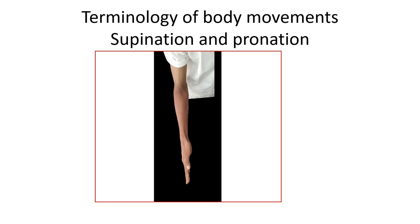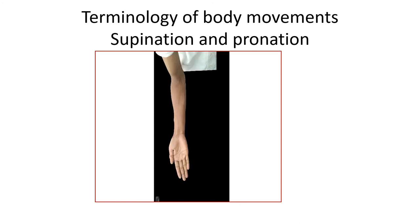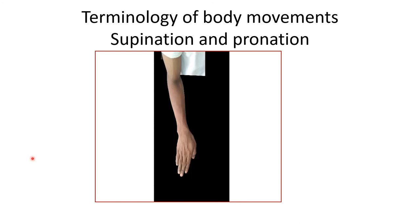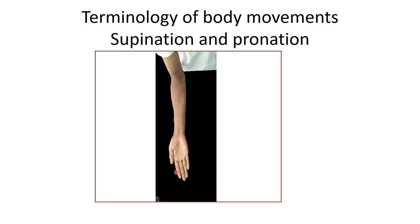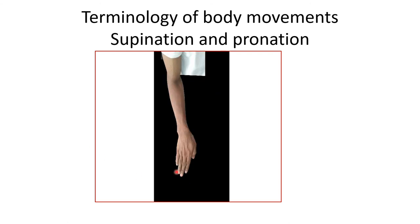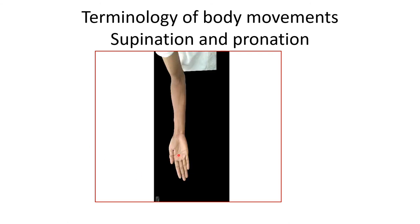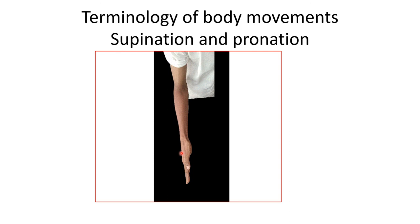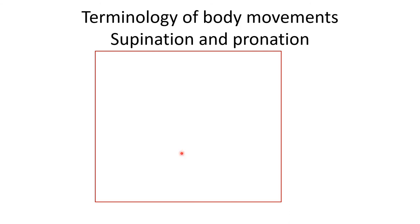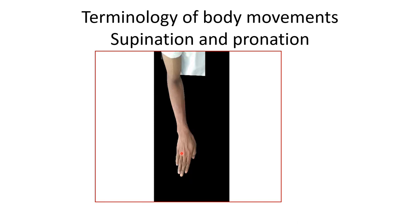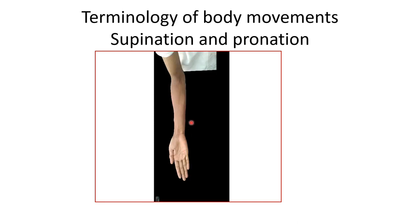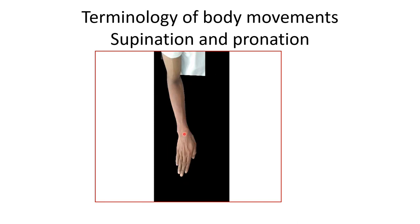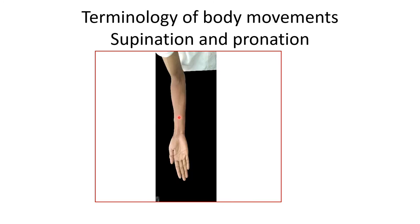Now see the movements in the forearm — they are supination and pronation movements. This is supination, this is pronation. The in-between position is the mid-prone position.